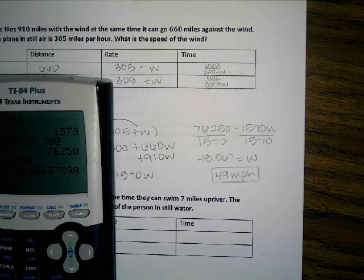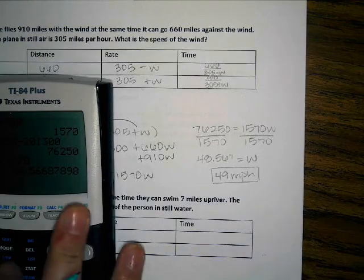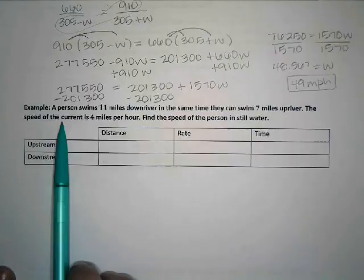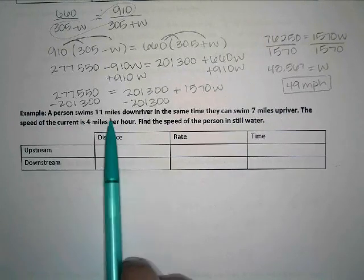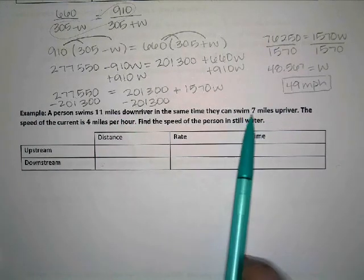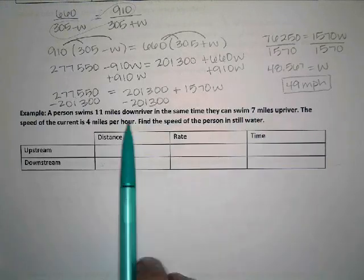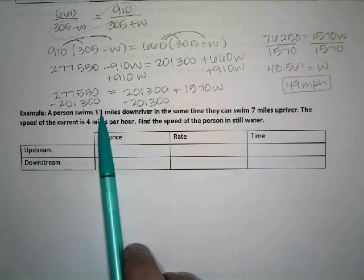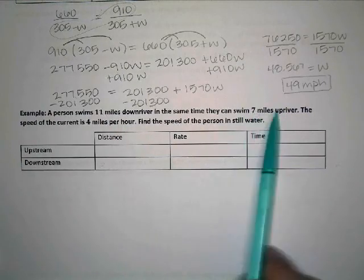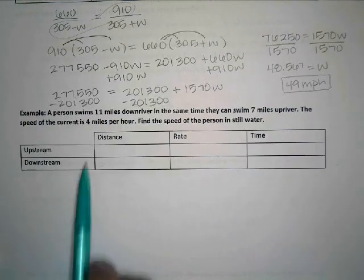Let's look at one more example like that. So we're back to a water problem. So we have a person swimming 11 miles downriver. At the same time, they can swim 7 miles upriver. So you can see the downriver is the part where the current would be added. That would be helping them. 7 miles upriver, that's where the current is working against them. The speed of the current is 4 miles per hour.